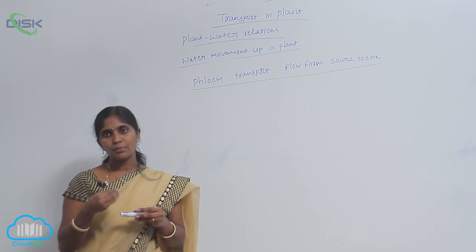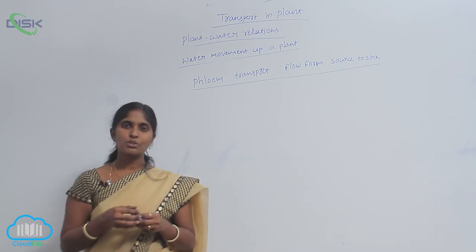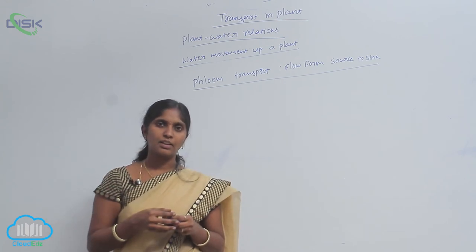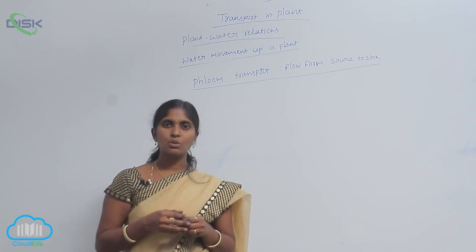When the pressure potential is high, the sucrose sap migrates from high pressure potential to low pressure potential, and finally it reaches into the storage organs.